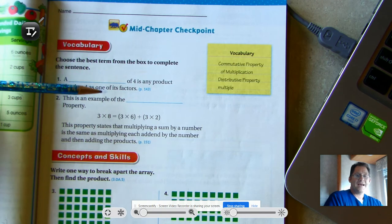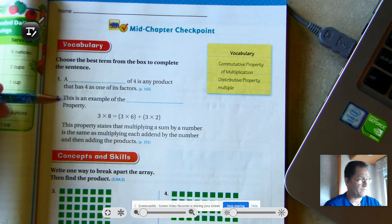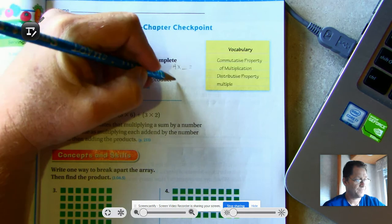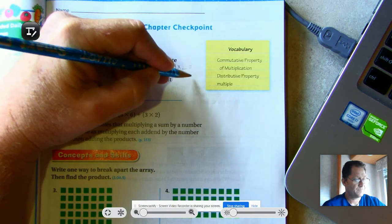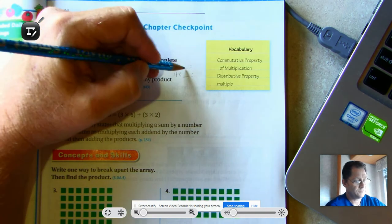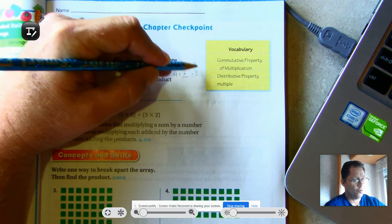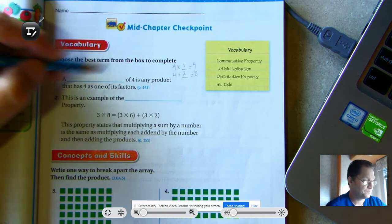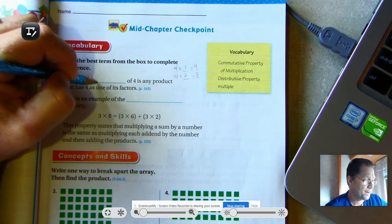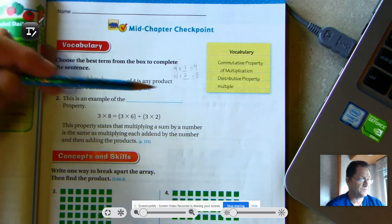So a multiple of four is any product that has four as one of its factors. So it's saying something like four times what? The product of any number and four. So if we said one times four, we get four; two, we get eight. So those would be multiples. A multiple of four is any product that has four as one of its factors.